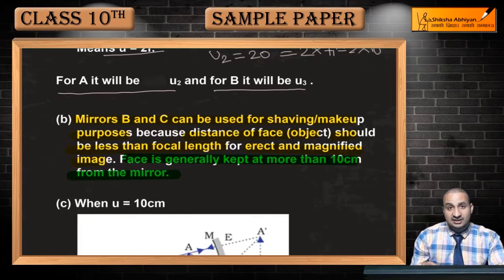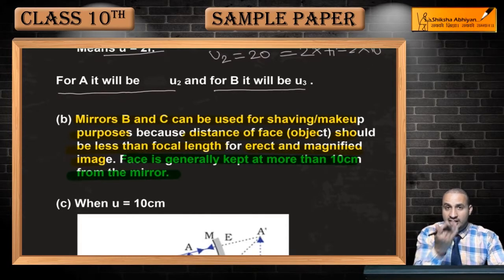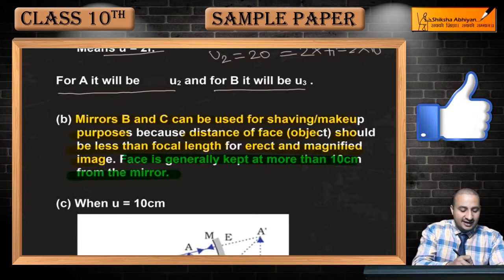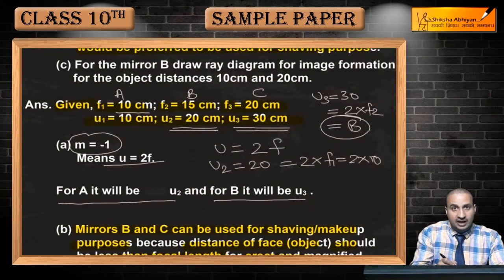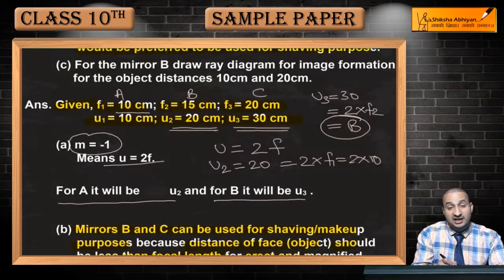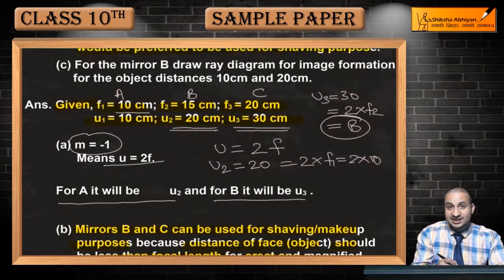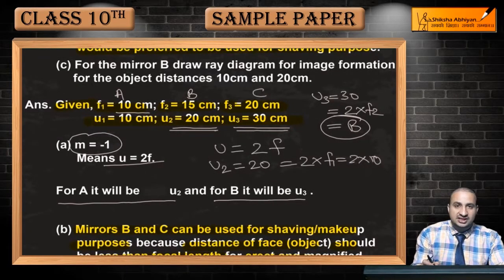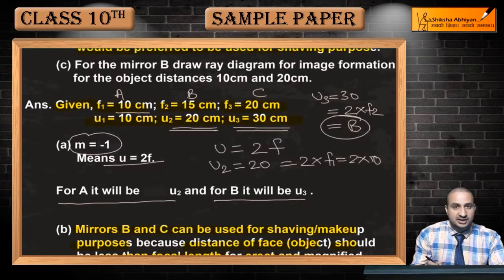Kyunki 10cm se pass rakhenge to wo face clearly dikhaayi nahi degi usko. To hum generally jo face ko rakhte hain mirror ko 10cm se zyada duri par. Ab agar pehla wala case yahaan par dekhein, yaha to focal length hi 10cm hai. Aur aap 10cm focal length se zyada par object ko rakhenge to yahaan par to nahi nazaar aayegi magnified or erect image. Ab f2 or f3 ke case mein use kar sakte hain as a shaving and makeup purpose ke liye.